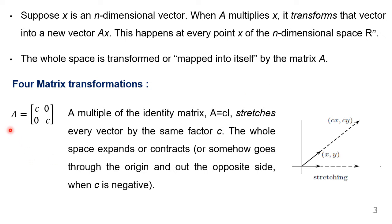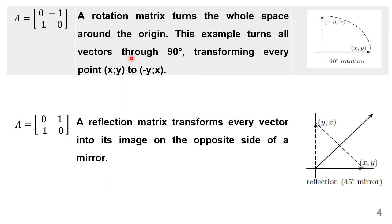Let us define the matrix A equal to [[C, 0], [0, C]]. We consider a vector defined by the coordinate (x, y). When we multiply this vector with matrix A, we get the result as (Cx, Cy). If the value of C is greater than 1, it gets stretched. And if the value of C is chosen between 0 and 1, we get a contracted vector. Suppose if you want to get a vector on the opposite side, then we take the value of C as negative.